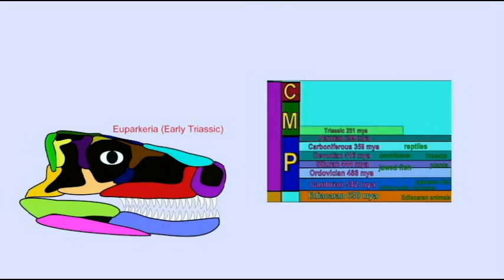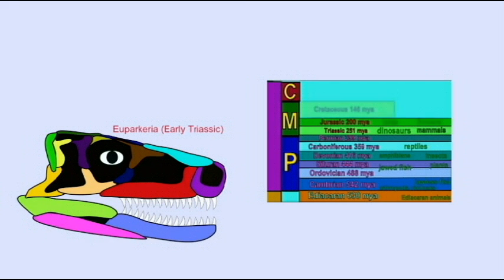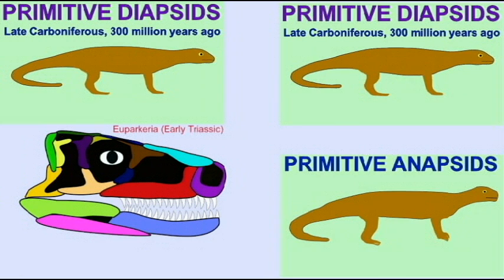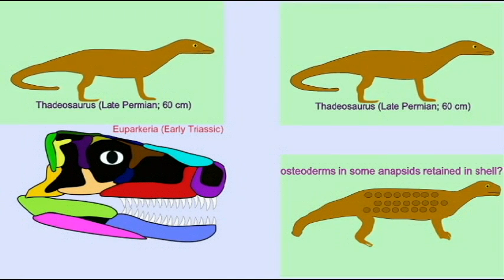250 million years ago, the Triassic period began in the aftermath of the worst extinction in Earth's history at the end of the Permian period to begin the Mesozoic era.